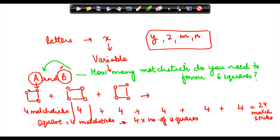So the number of matchsticks which are required is 4 into number of squares. So if I were to form only one square, I need only four matchsticks. For two, I need 4 plus 4 which is 8 and 8 is how much? 4 into 2 and so on. So basically, what B did here was...